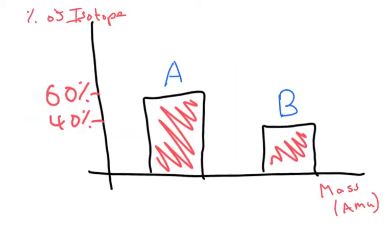So here I've got a graph with a percentage of isotope on the y-axis and I've got the mass in atomic mass units on the x-axis.